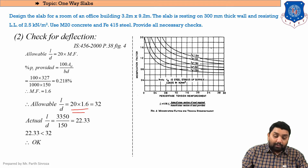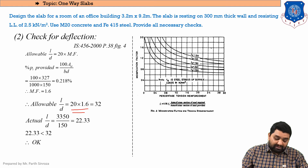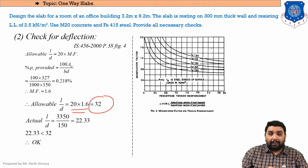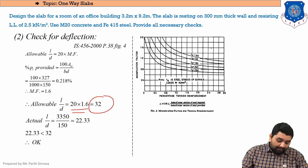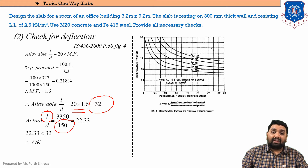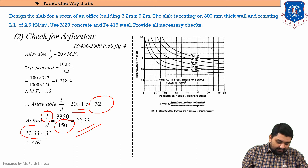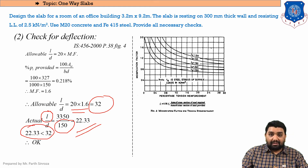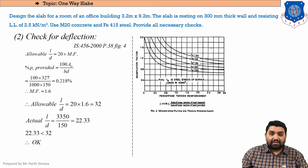The allowable L/d on the right-hand side = 20 × MF = 20 × 1.6 = 32. The actual L/d on the left-hand side = effective length / effective depth = 3350 / 150 = 22.33. Since 22.33 ≤ 32, the check is satisfied. The slab will not fail in deflection.